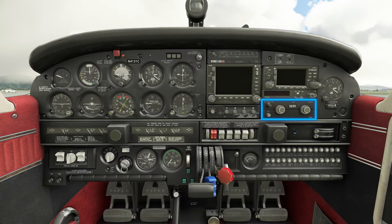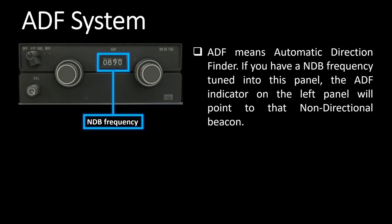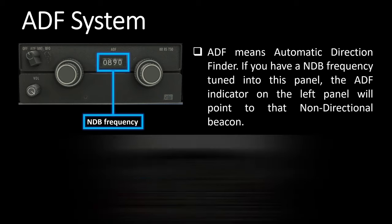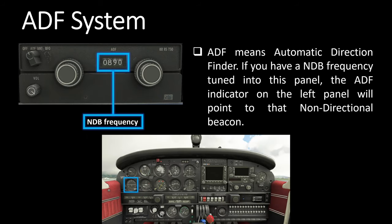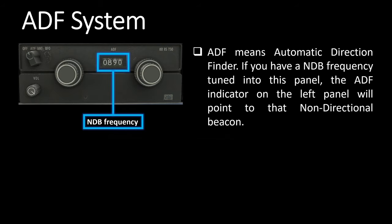On the left of the alternate altimeter is the ADF system. ADF means automatic direction finder. If you have an NDB frequency tuned into this panel, the ADF indicator on the left panel will point to that non-directional beacon. As mentioned previously, this type of navigation is rarely used now but is still taught to pilots in case it is needed. I'm not going into a lot of detail on NDB navigation because we won't be needing it in our full flight.